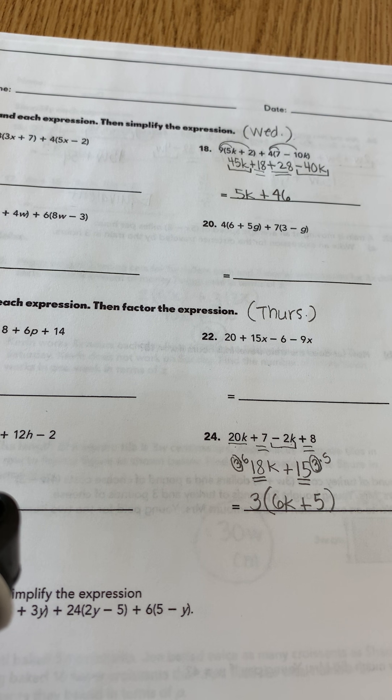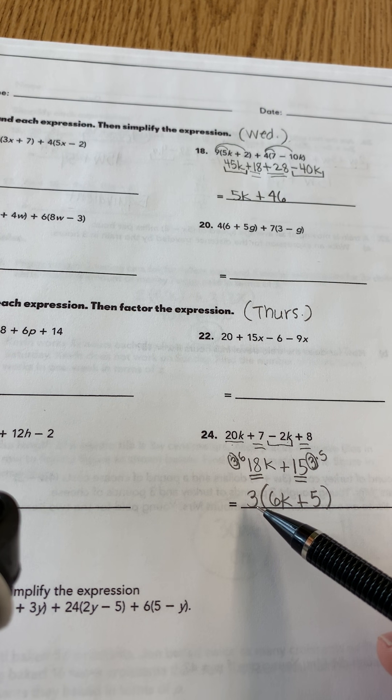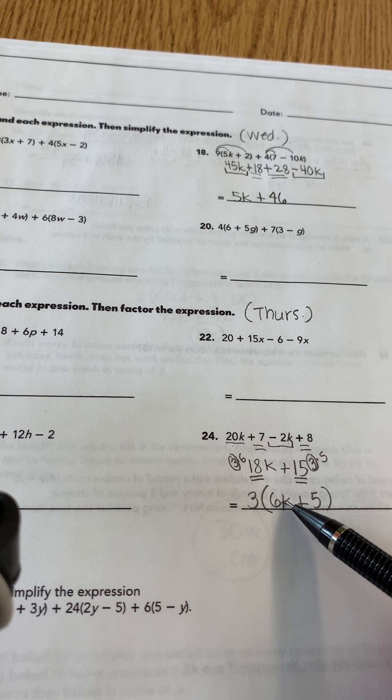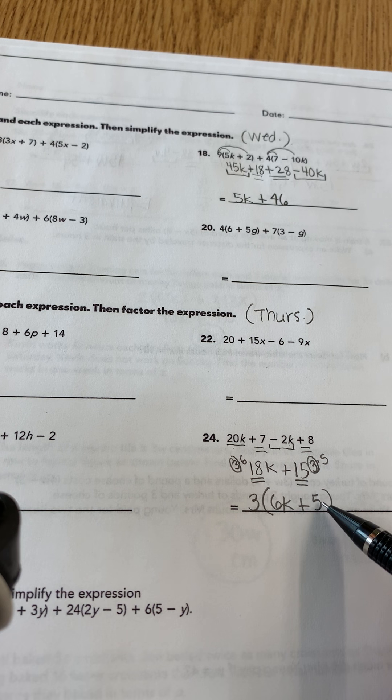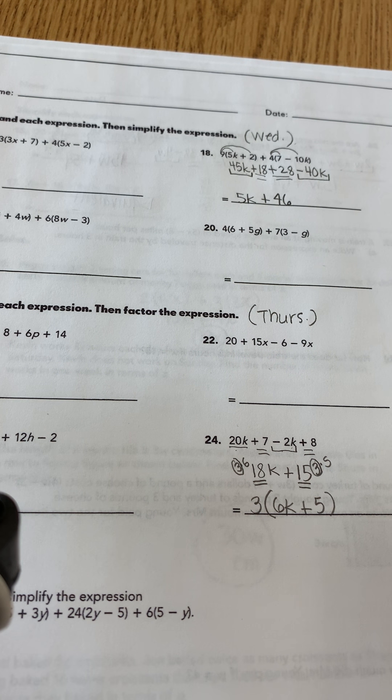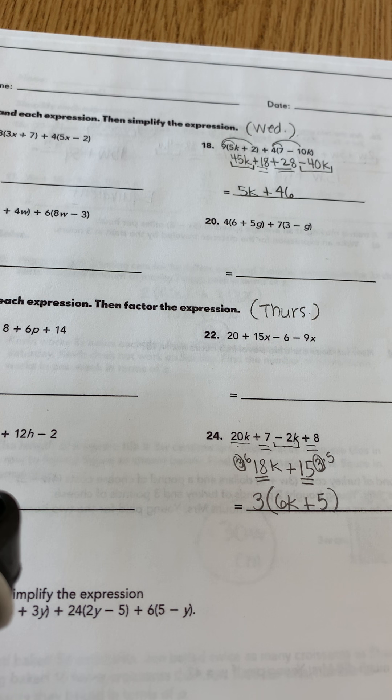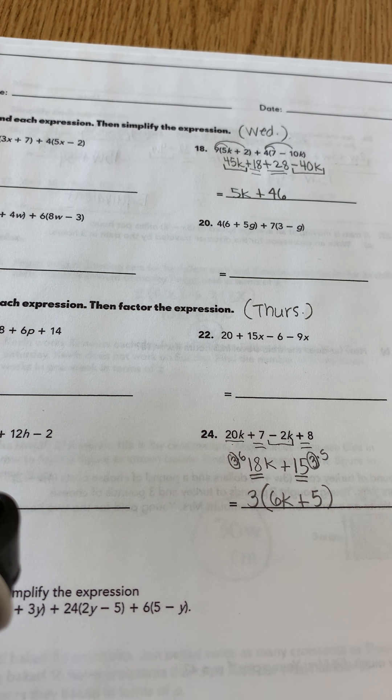And again, you can always distribute to see if you did it correctly. So 3 times 6k is 18k. 3 times 5 is 15. 18k plus 15. We got it. All right. I want you to try to factor them and have a great one. And we will talk to you soon. Bye.